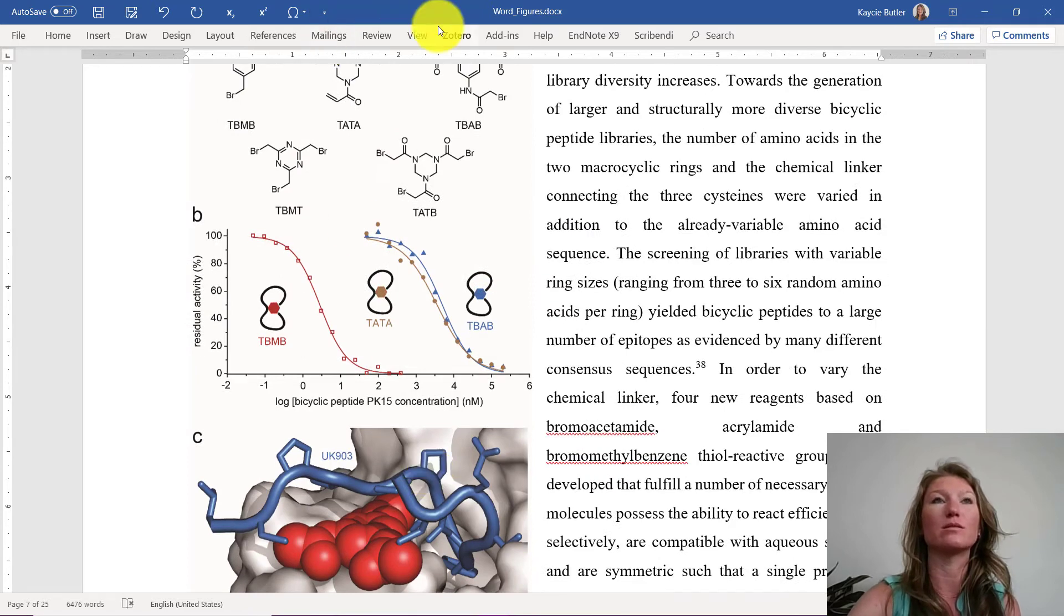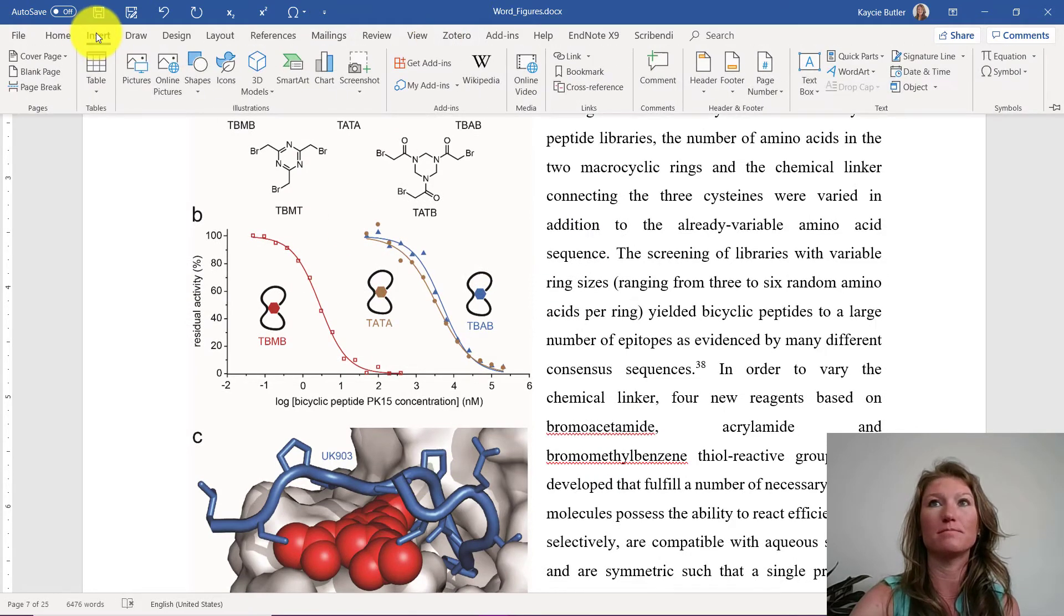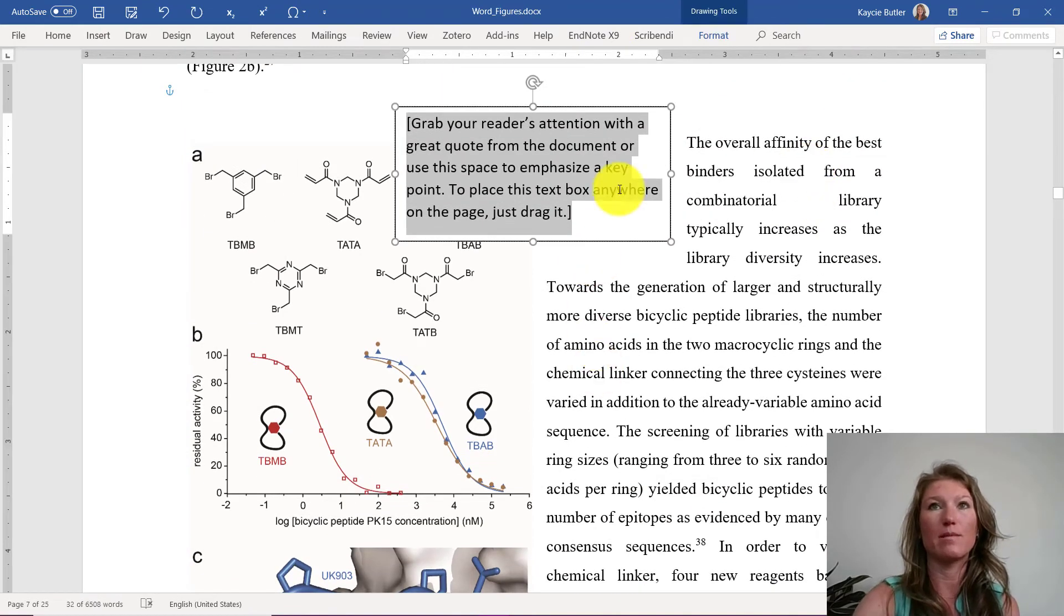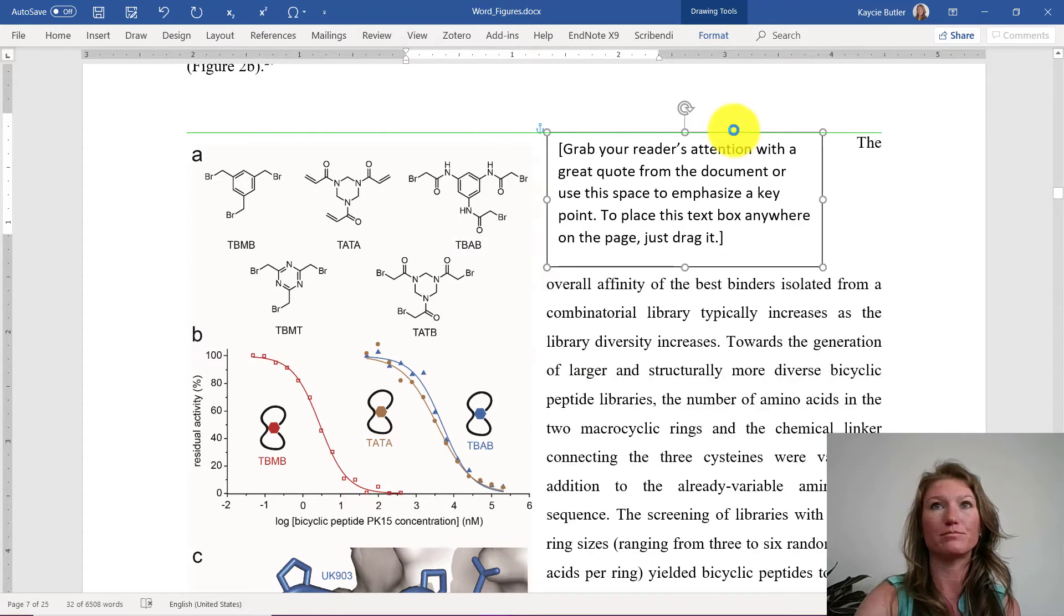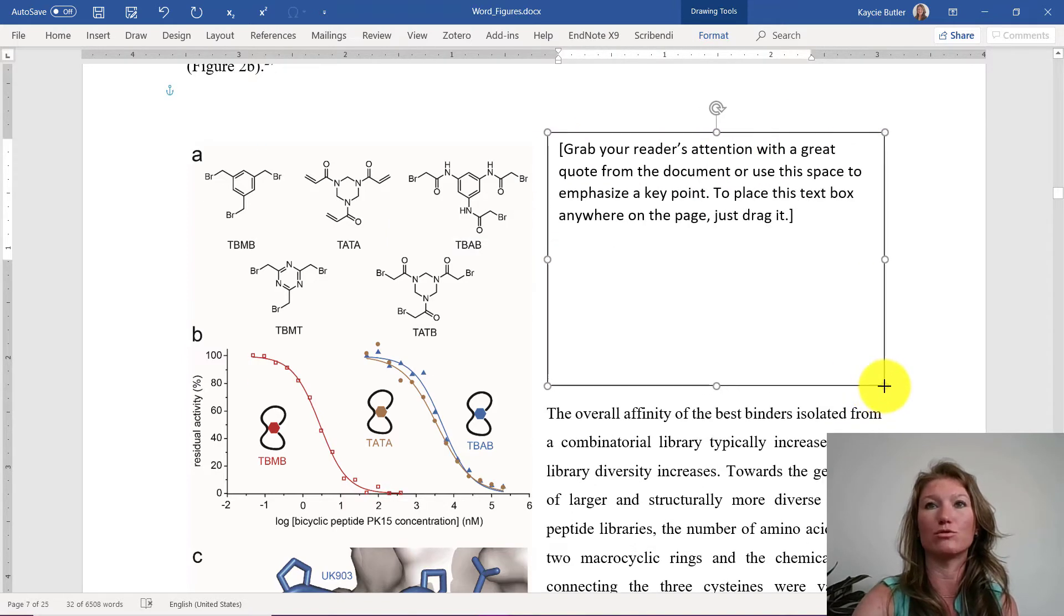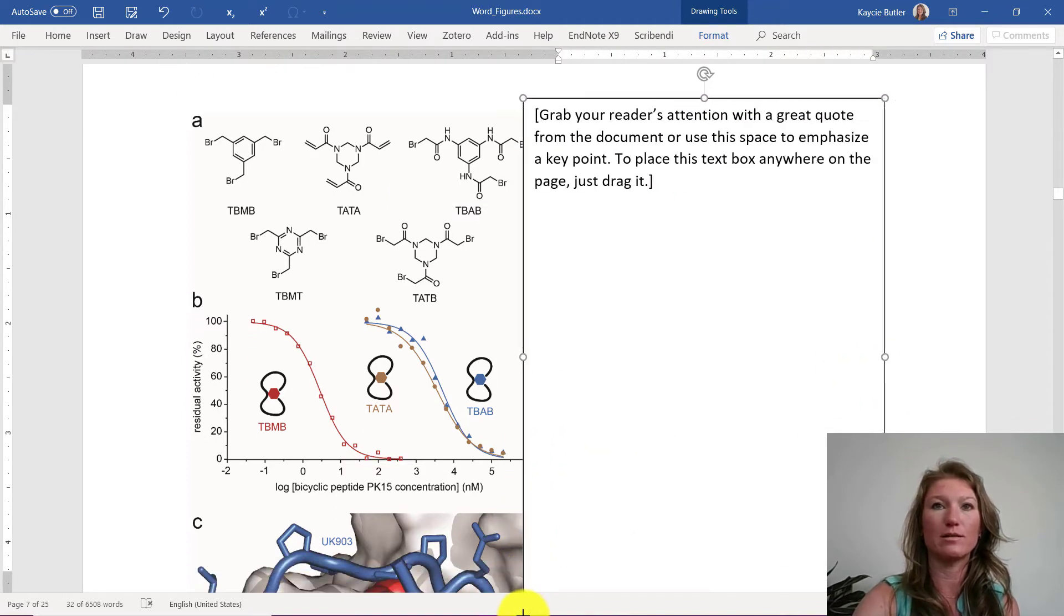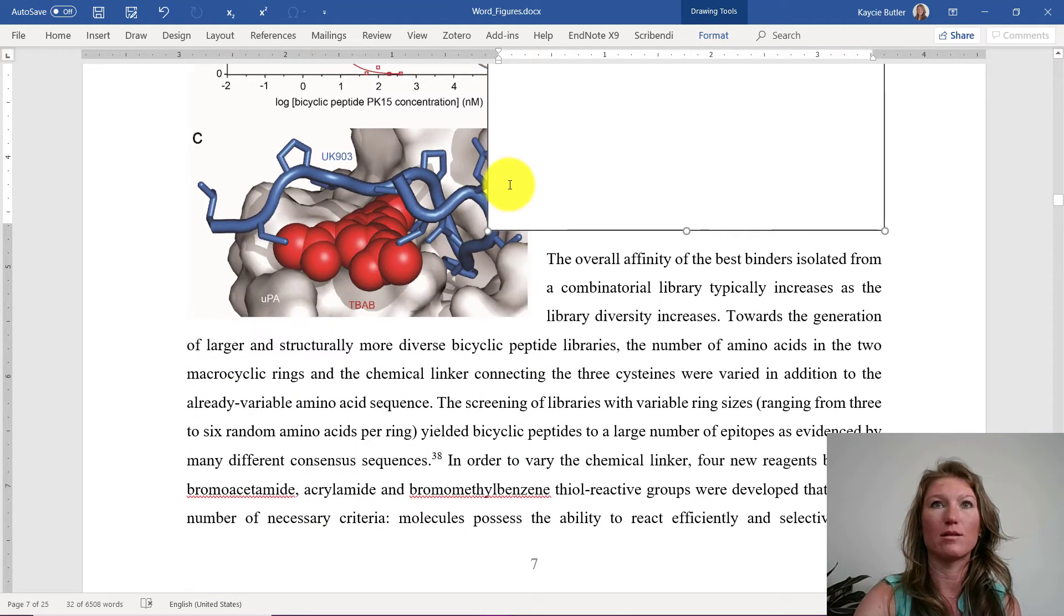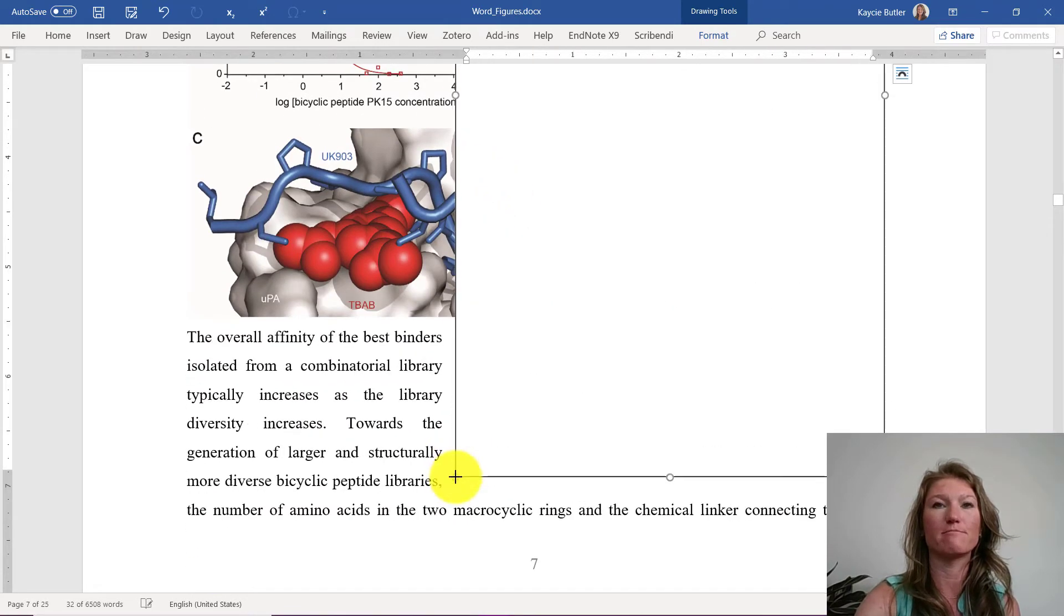The first thing that I'm going to do is go up here to insert, and I'm going to insert a text box. Just a simple text box in the body of my Word document. And what I'm going to do is drag this text box and make it bigger than my figure, like this.